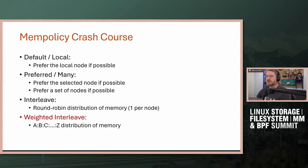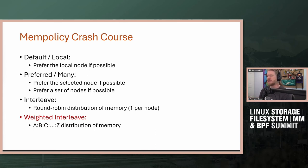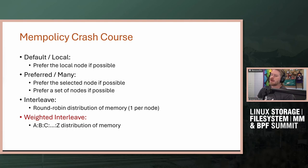A quick mem policy crash course. There are basically four different types of policies. The default or local policy says: on allocation, if local memory is available, use that. Preferred says: if memory is available on the preferred node, use that. Interleave is a round-robin distribution — every node gets one page in round-robin mode. And weighted interleave is basically round-robin but with different weights applied, so you can have different distributions of memory per node — using nodes as a tier stand-in.